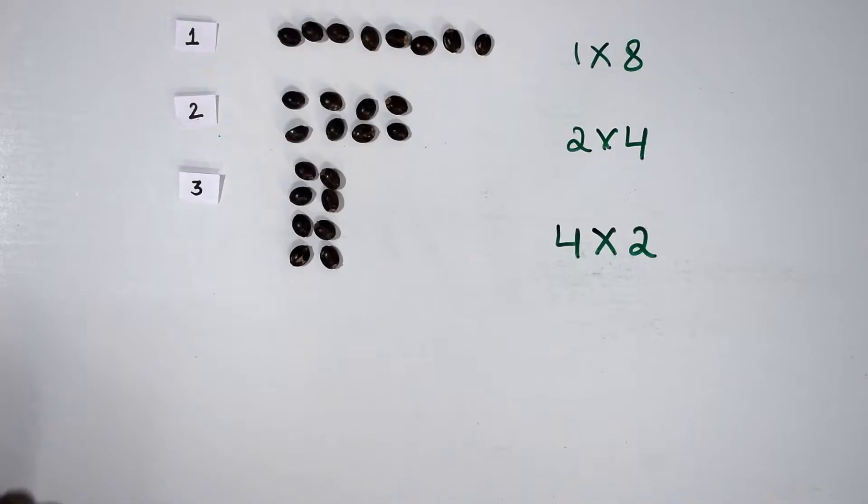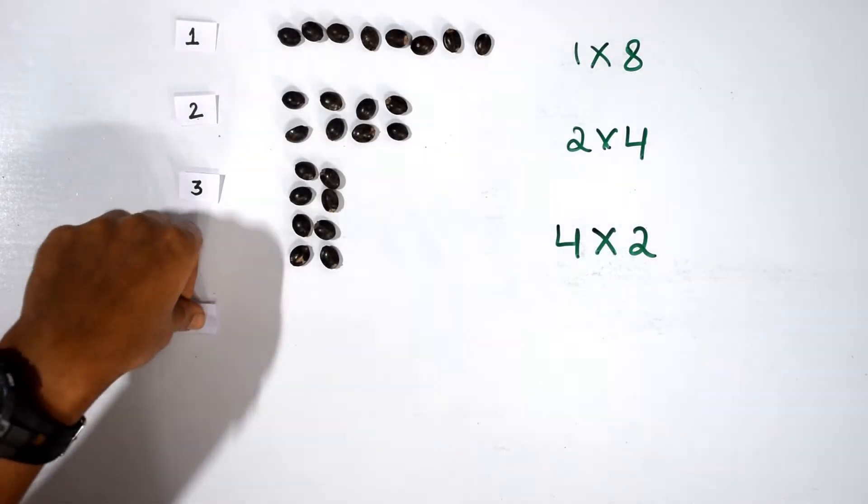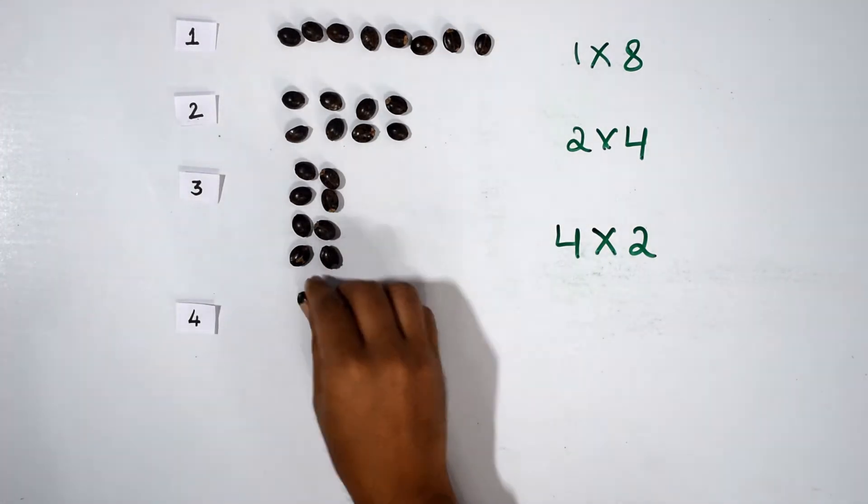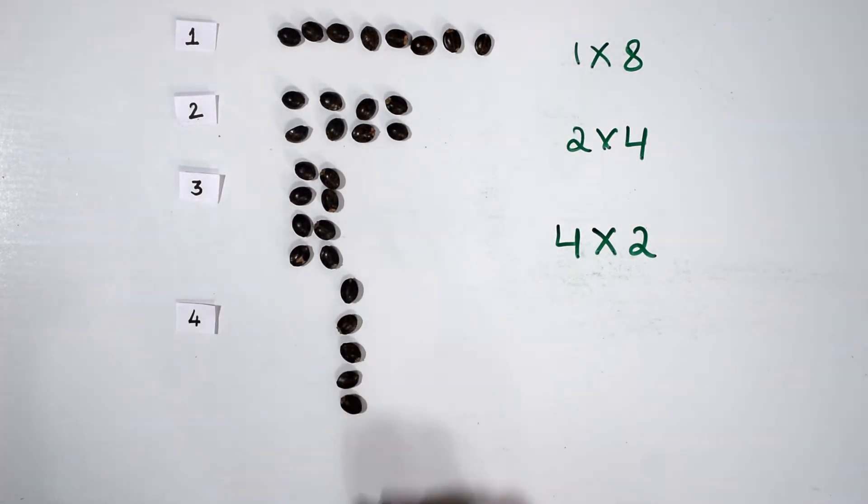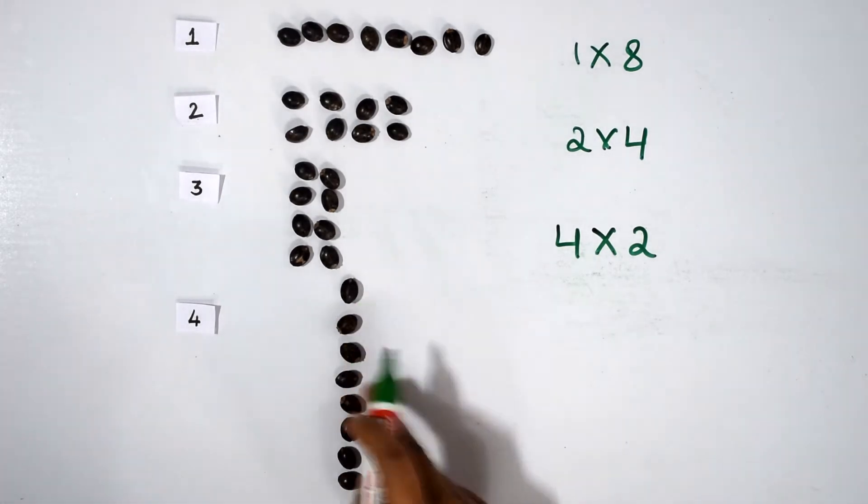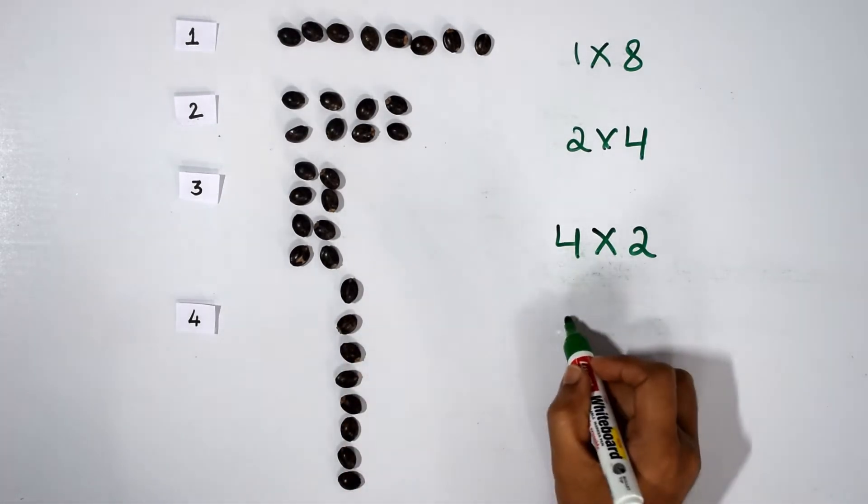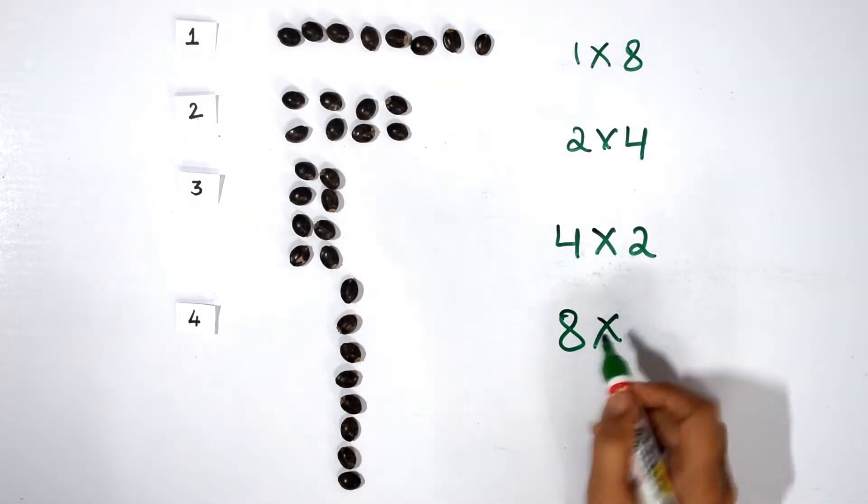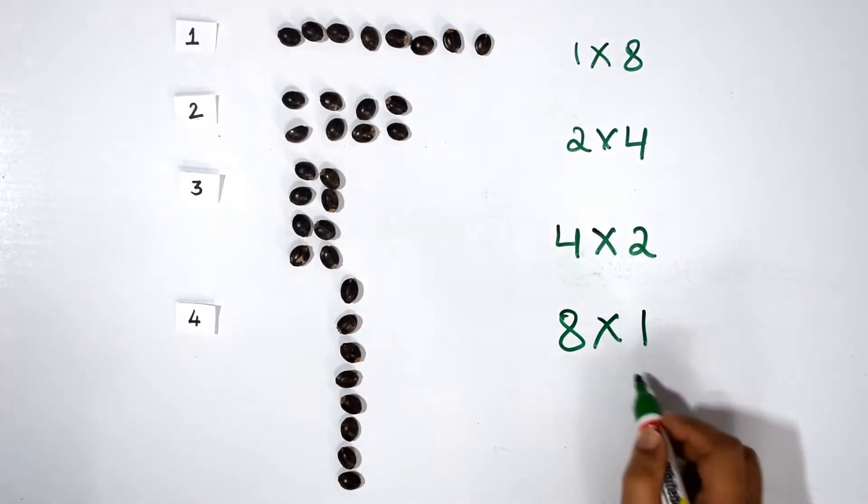In the fourth case, she arranges them in this way. This has eight rows and one column, so eight times one.